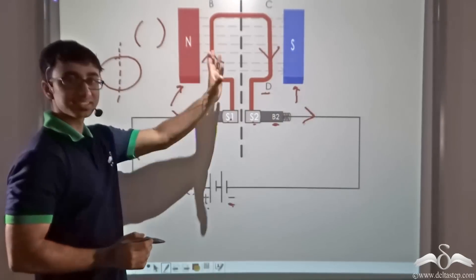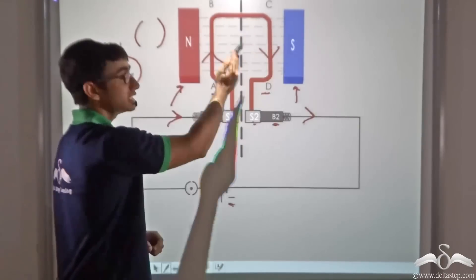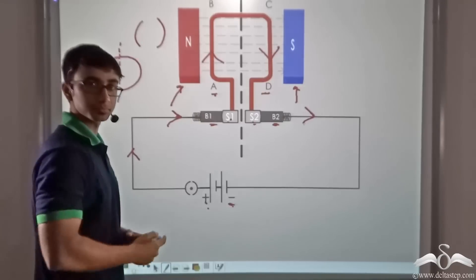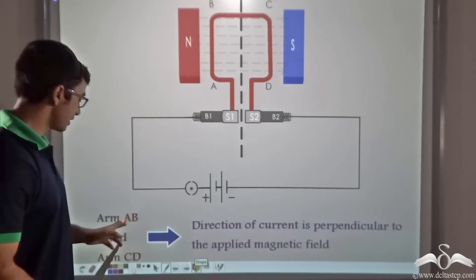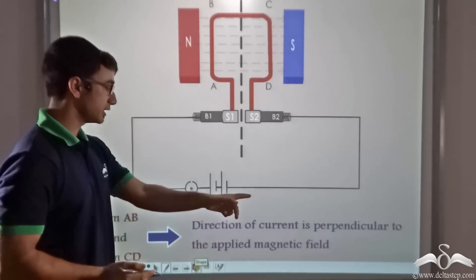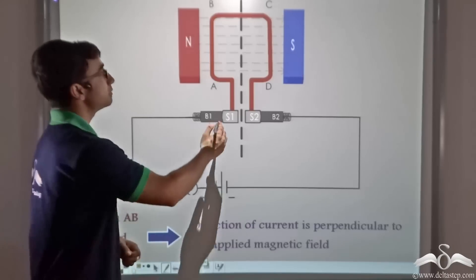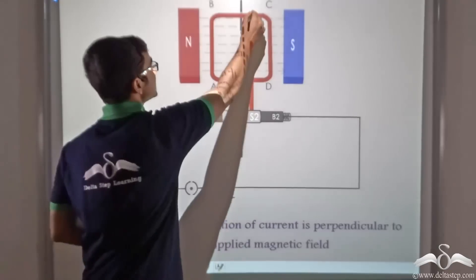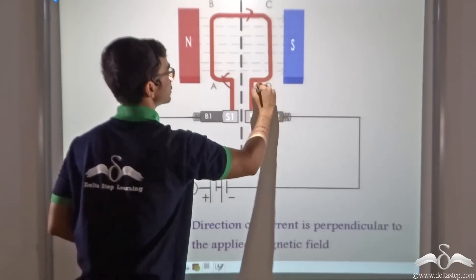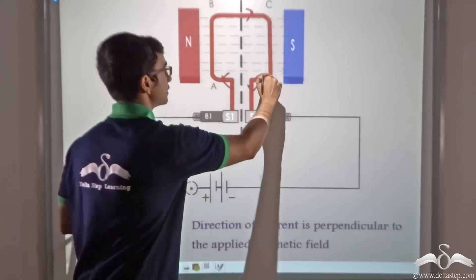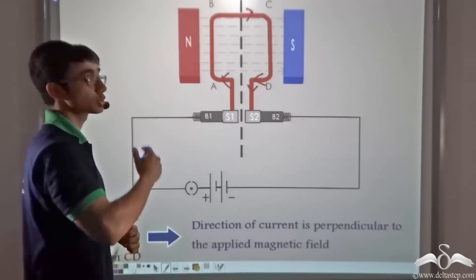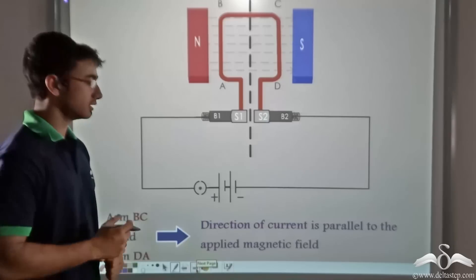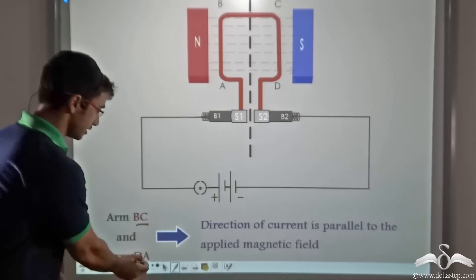If you consider arms AB and CD separately, you will find that the direction of current in both these arms is perpendicular to the direction of the external magnetic field, so there will be a certain force that acts on them. However, if you consider arms BC and AD, in these arms the current direction is parallel to that of the magnetic field, so due to this no force will act on those two arms.